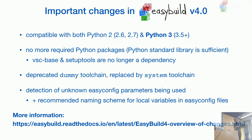Another change in EasyBuild 4 is that it will now detect unknown EasyConfig parameters — keys in EasyConfig files that aren't known to EasyBuild, which could be typos or mistakes. It will print out a warning if it sees anything it doesn't know. We also implemented a naming scheme for local variables: if you prefix them with local_underscore or just underscore, EasyBuild won't complain about those. All these changes are documented in a separate page in the documentation.